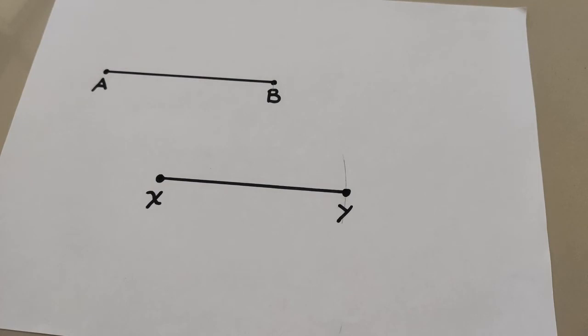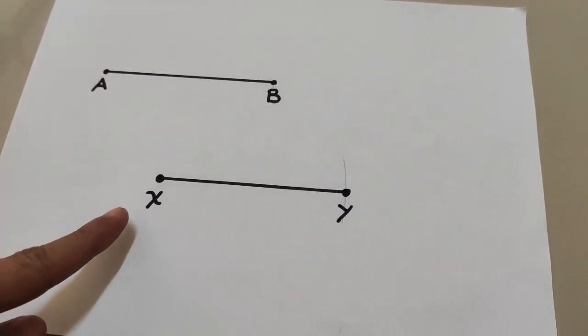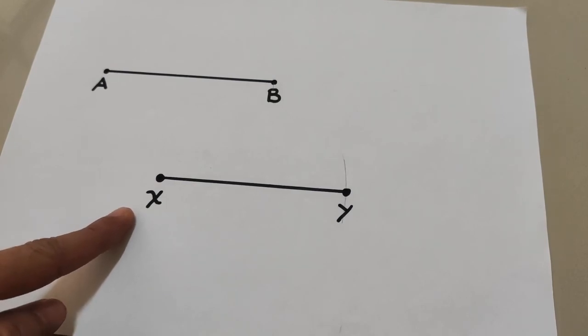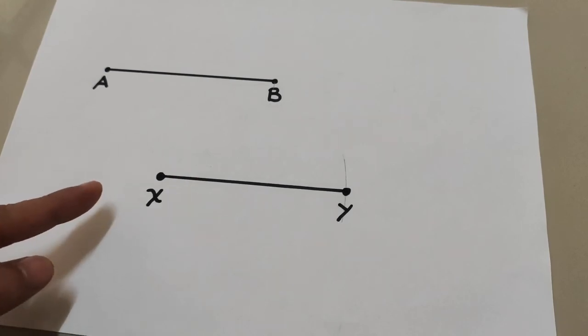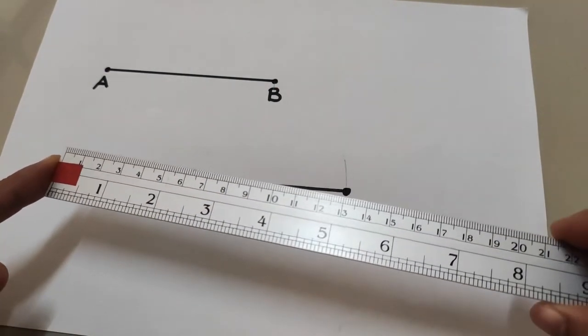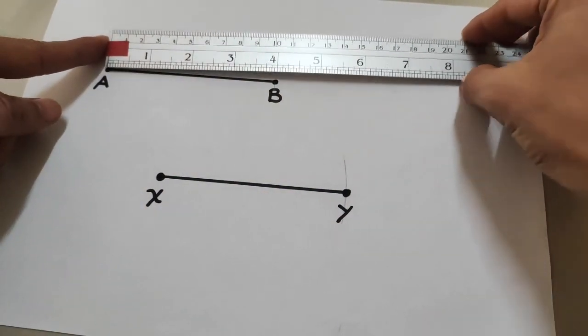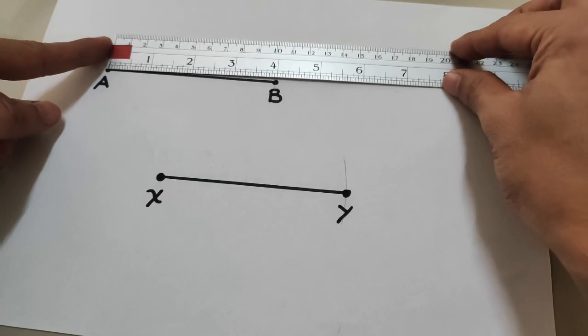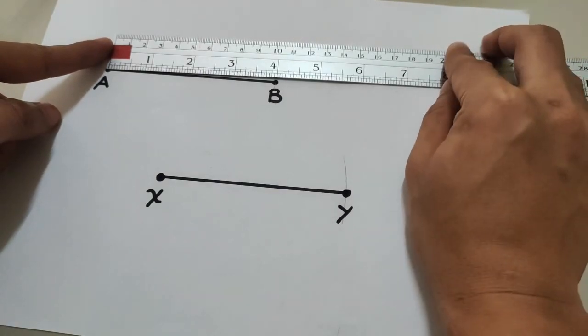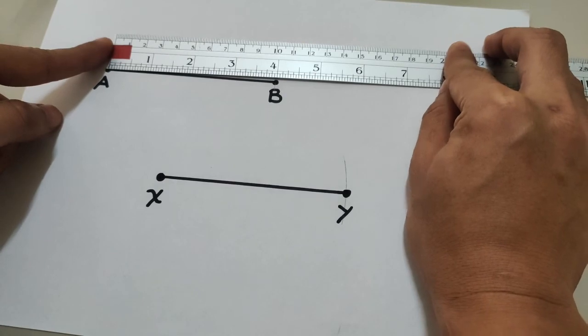Segment AB is congruent to segment XY. To make sure and to check, we can use a ruler to measure the length of each segment. If we measure segment AB, segment AB is 4 inches.